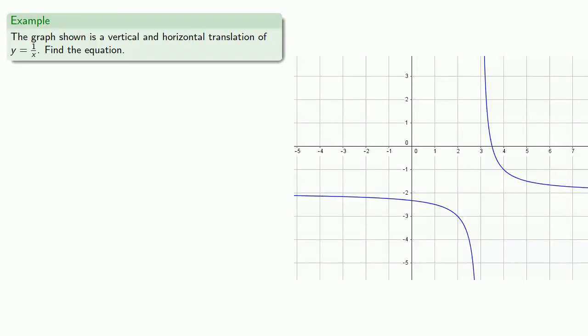Now let's combine these ideas with horizontal and vertical translations. The graph shown is a translation of y = 1/x. Let's find the equation. Notice that our graph has two asymptotes: x = 3 and y = -2.